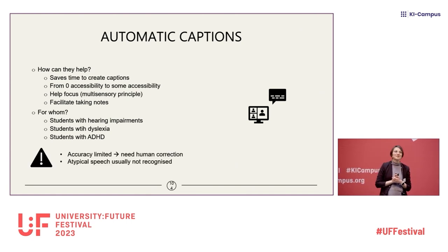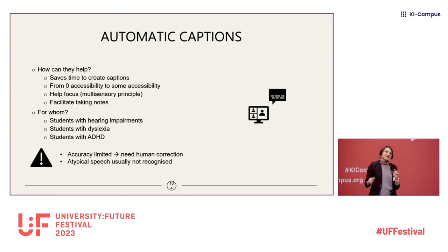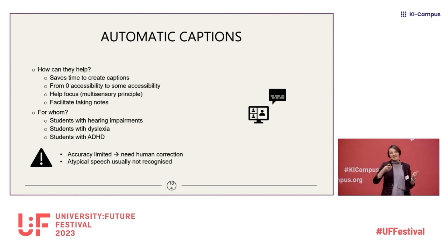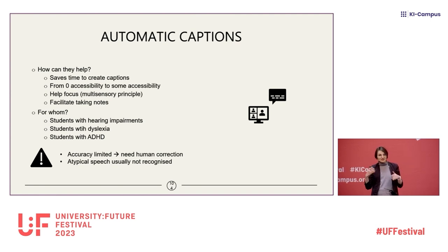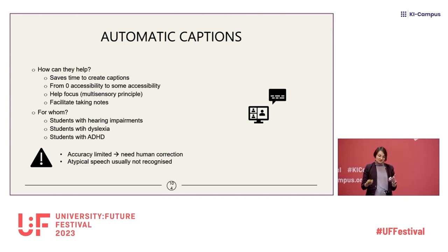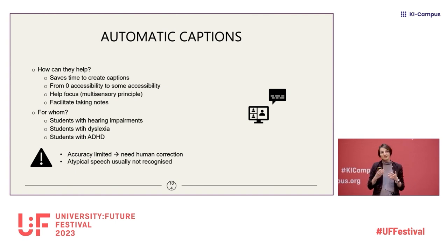Technology is not a miracle. Accuracy is still limited and it still needs human correction. If you're a non-native speaker, you can listen and identify a wrong word. But if you have a hearing impairment, that may not be possible, so you still need to correct for it. There is another issue: speech-to-text software typically has difficulties transcribing atypical speech, which literally means some people's voices will not be transcribed. Google is working on this, but it's still an issue we need to keep in mind.